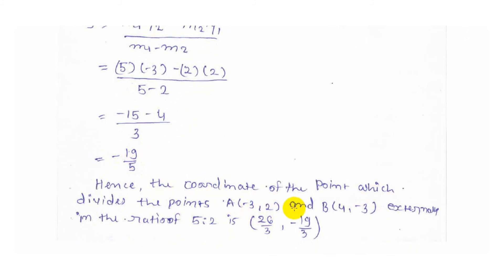Hence, the coordinate of the point which divides the points A(-3, 2) and B(4, -3) externally in the ratio of 5:2 is (26/3, -19/3).